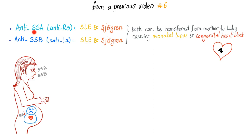For Sjögren syndrome, anti-SSA and anti-SSB are seen in both SLE and Sjögren. Both can be transferred from mother to baby, leading to neonatal lupus and congenital heart block. When you have Sjögren syndrome with these antibodies, you have a higher risk of non-Hodgkin's lymphoma.